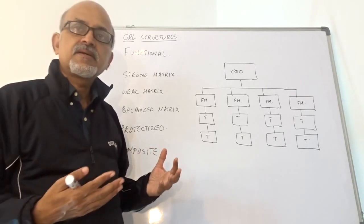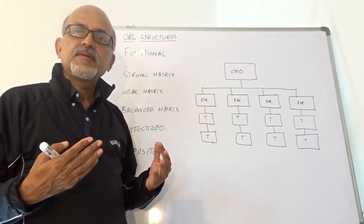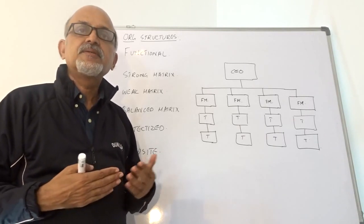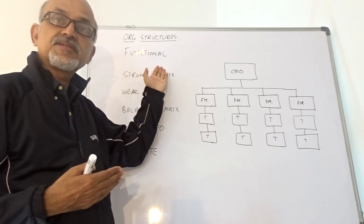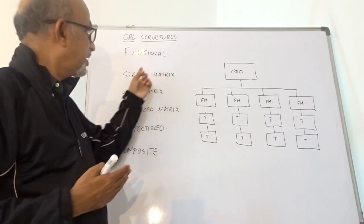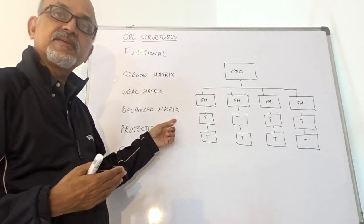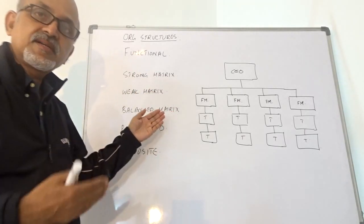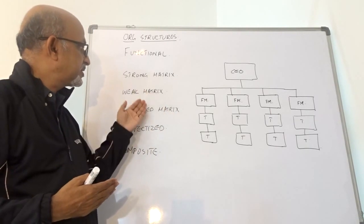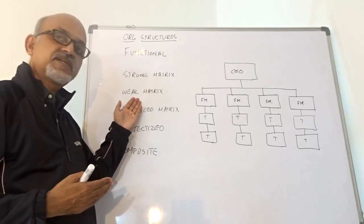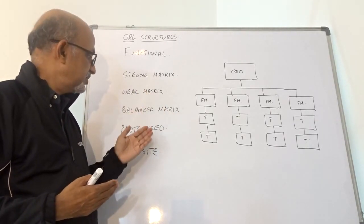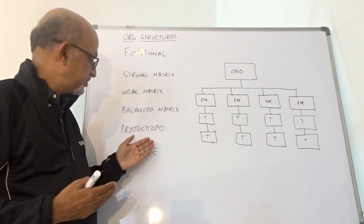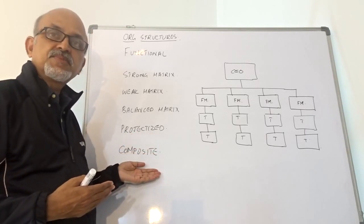Basically, there are three types of organizational structure. We start with the functional organization and then a matrix kind of thing. The matrix organization can be further classified into strong matrix, weak matrix, and balanced. And then comes the projectized organization and then the composite.